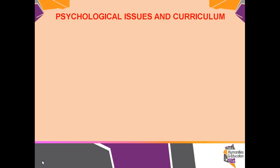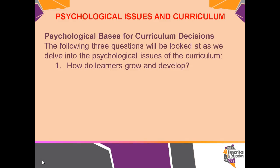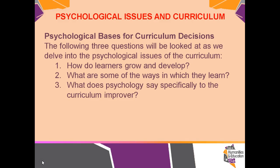We will now address the last of the objectives of this module: the psychological issues and curriculum. The following three questions will be looked at as we delve into the psychological issues of the curriculum: How do learners grow and develop? What are some of the ways in which they learn? What do psychologists say specifically to the curriculum improver?